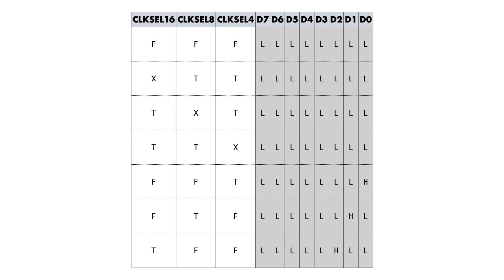Here's the truth table for the read-only clock speed register — it's very simple. If clock select 4 is selected, the register reads as 1 because the CPU speed is 1MHz in that case. If clock select 8 is selected, it reads as 2, and if clock select 16 is selected, it reads as 4. All the other combinations read as 0, which makes sense because those combinations also result in no clock output.